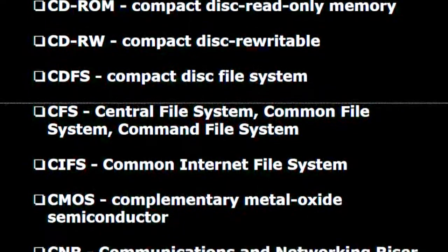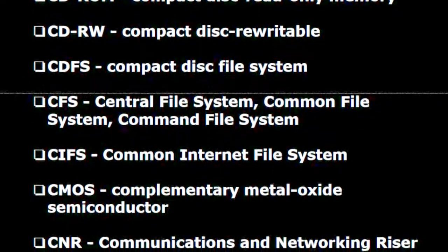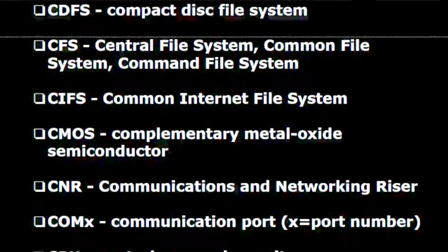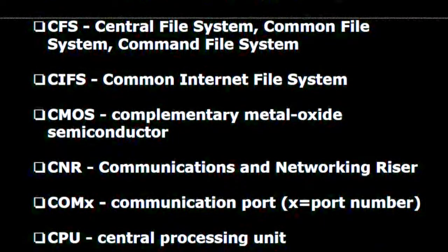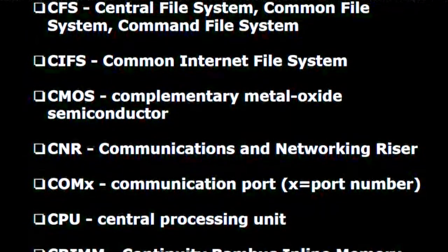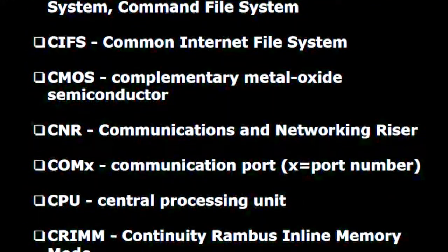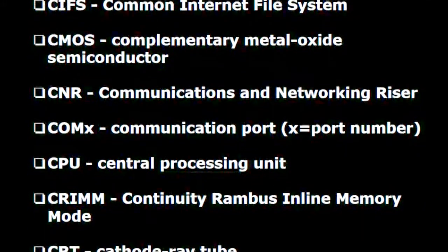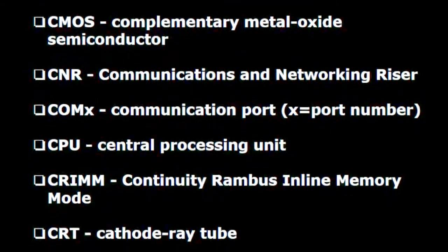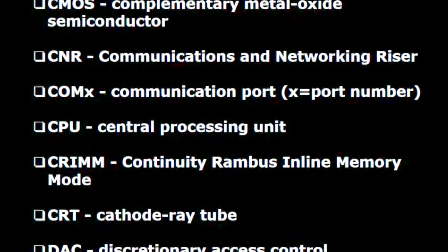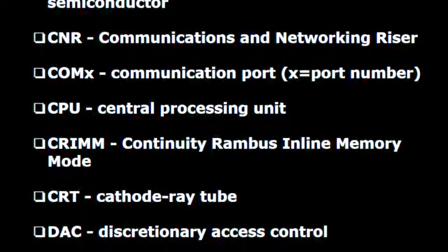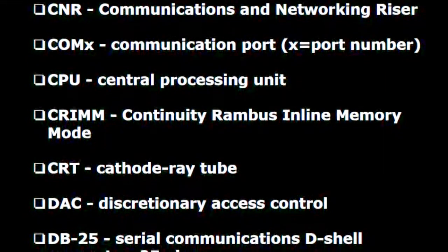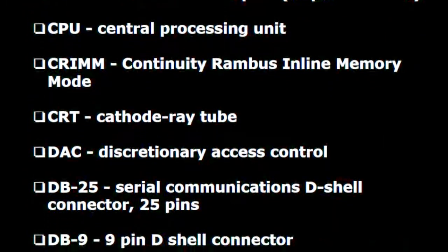C.F.S. — Central file system, common file system, command file system. C.I.F.S. — Common internet file system. C.M.O.S. — Complementary metal oxide semiconductor. C.N.R. — Communications and networking riser. C.O.M. — Communication port, X equals port number. C.P.U. — Central processing unit. C.R.M. — Continuity RAM bus inline memory module. C.R.T. — Cathode ray tube. D.A.C. — Discretionary access control.